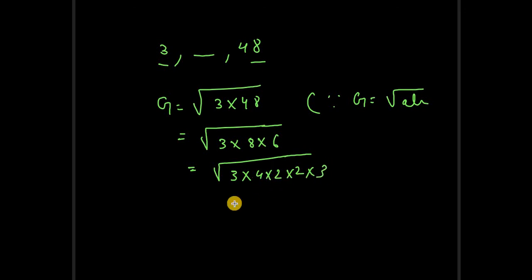Now, we can write 8 as 4 times 2, and 6 as 2 times 3. Now we can say that 2 times 3 cancels once, and we have 2 times 2 and 4. So we can take 2 out from there, and what we'll get is 12.